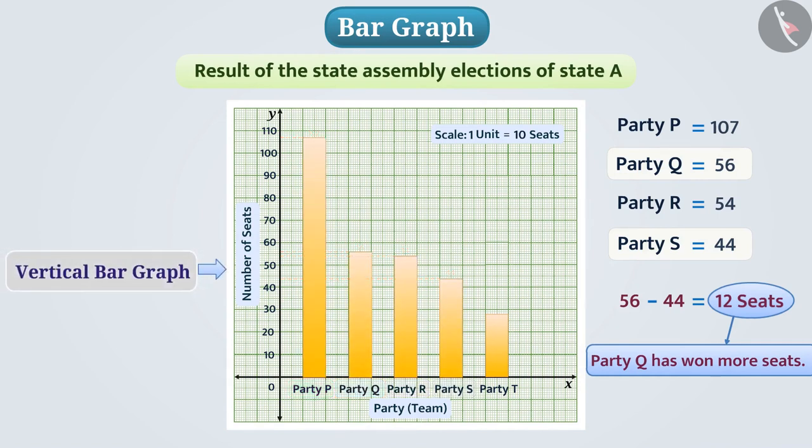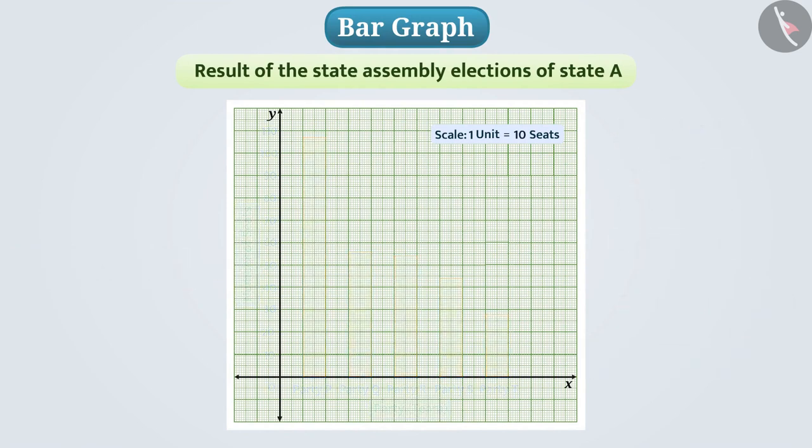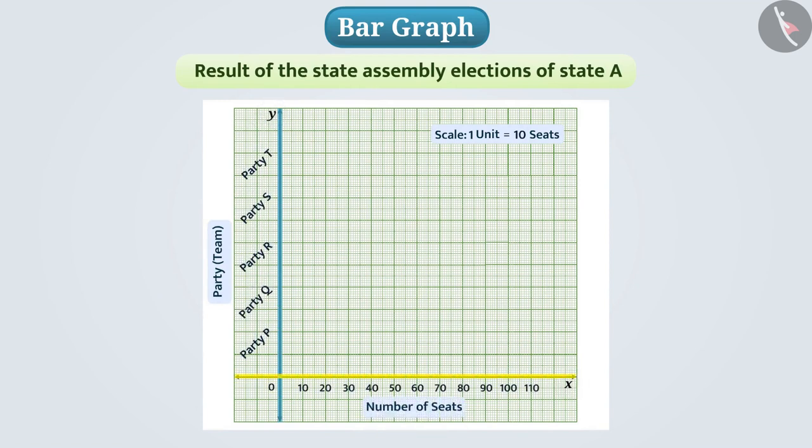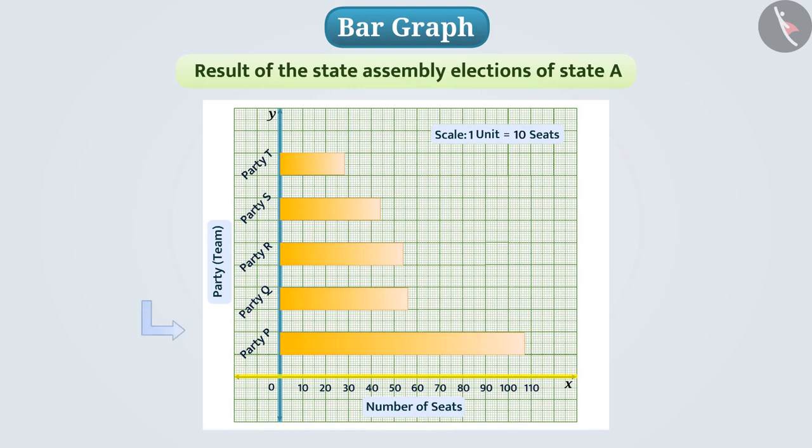Here we have shown a vertical bar graph. We can also represent it horizontally wherein we show the parties on the Y axis and the number of seats on the X axis. We call this bar graph the horizontal bar graph.